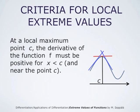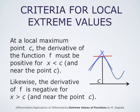We can say even a little bit more. If c is a local maximum value point, then on the left-hand side of c, right before c, the function f is increasing, and on the right-hand side, it is decreasing. This means that on the left-hand side, the lines tangent to the graph have a positive slope, so the derivative of f must be positive for x less than c and near the point c. Likewise, the derivative of f is negative for x larger than c but near the point c, since the tangent lines immediately on the right-hand side of c have a negative slope.